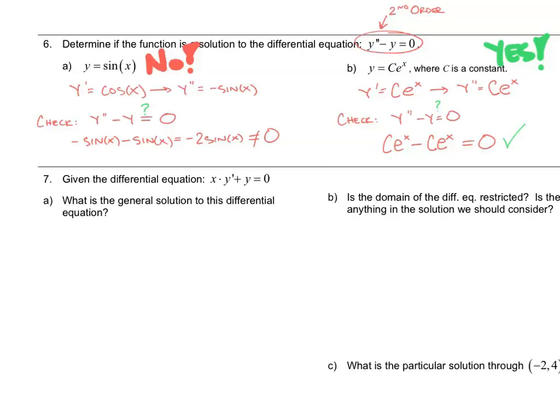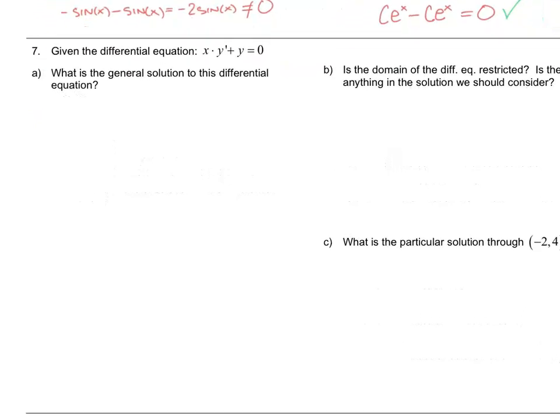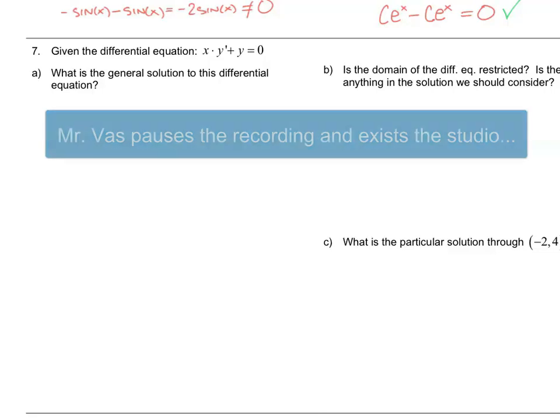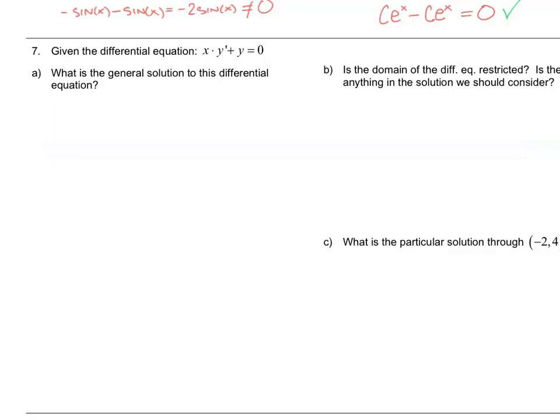That was pretty straightforward. Let's move into number seven. We're given the differential equation x times y prime plus y equals zero with three different parts. First: what is the general solution to this differential equation? My dogs are interested in that — they're barking in the background — so I went to talk to them about differential equations. Okay, the dogs and I talked and we got it all worked out. Ready to jump back into example seven.